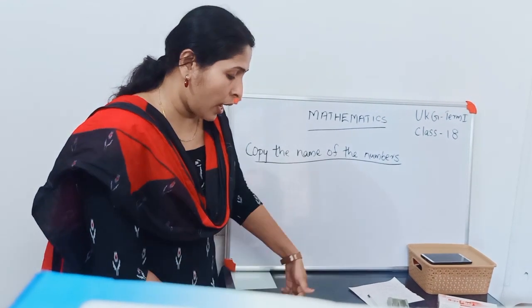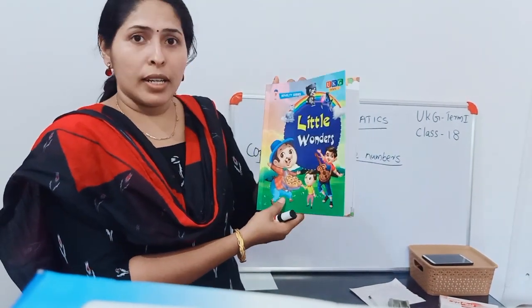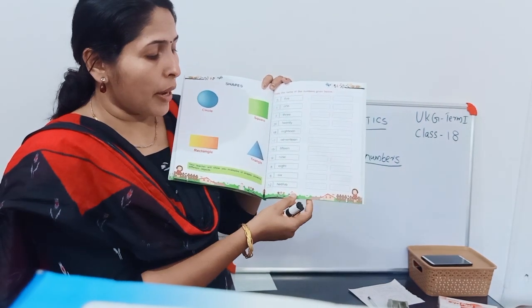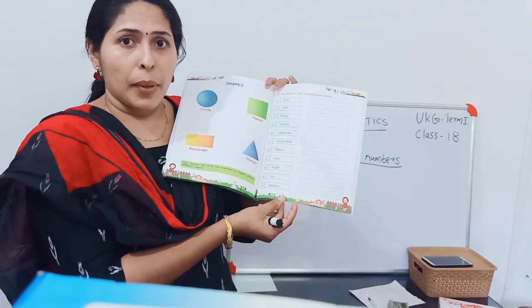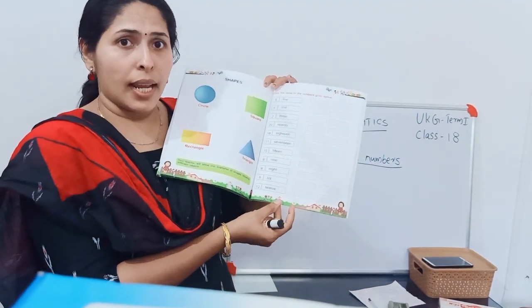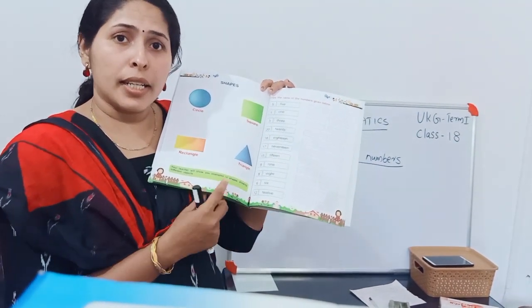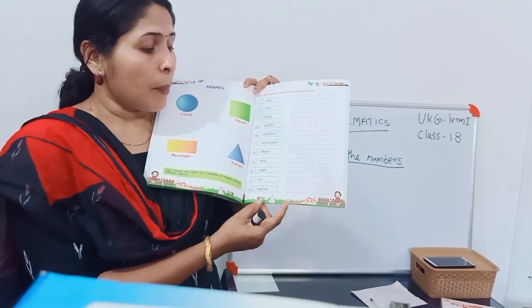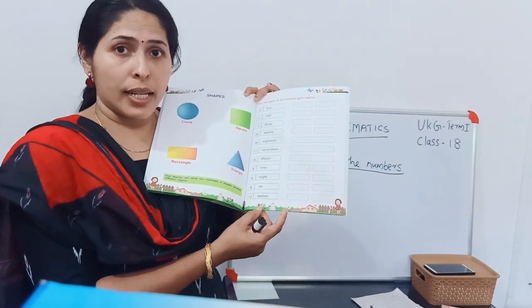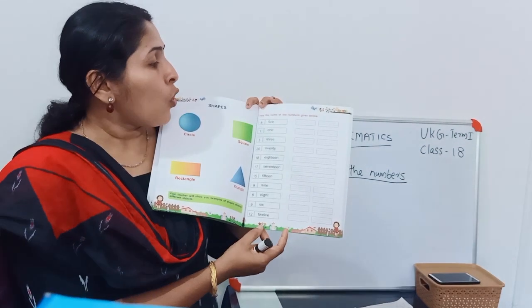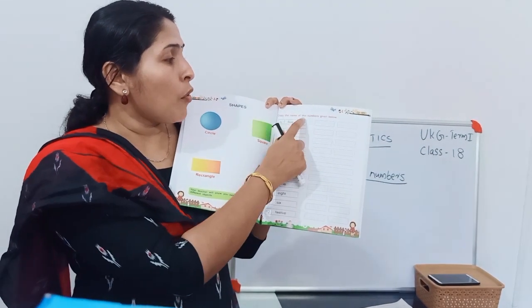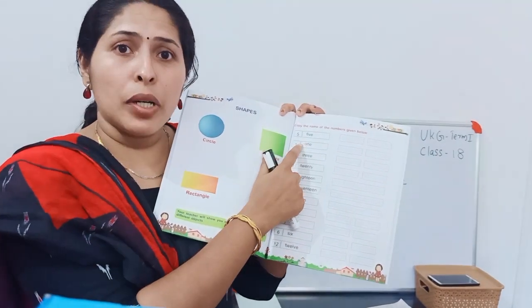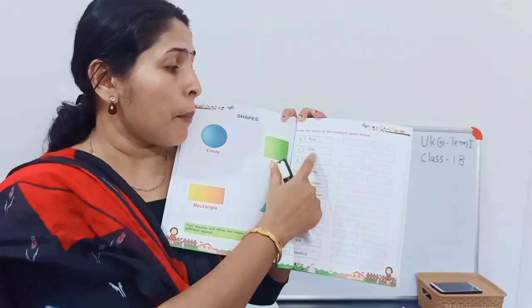This is the text for the first Little Wonders, page number 39. Copy the name of the numbers given below. We have some numbers and number names.